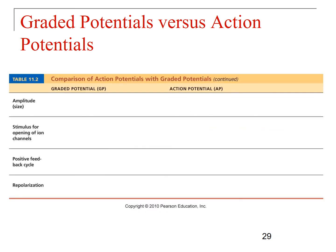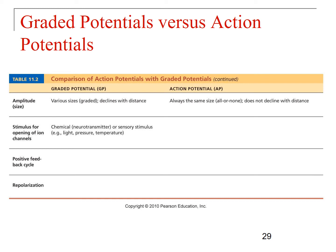In terms of amplitude or size: graded potentials can be various sizes and do decline with distance. With action potentials, they're always the same — negative 70 up to positive 30, down below negative 70, back up to negative 70 — and they don't decline with distance because they keep getting renewed through propagation. For graded potentials, the stimulus for the opening of ion channels can be chemical (a neurotransmitter) or some other sensory stimulus like pressure, light, or temperature. With an action potential, the stimulus is always voltage — triggered by a graded potential causing threshold to be reached at the axon hillock.